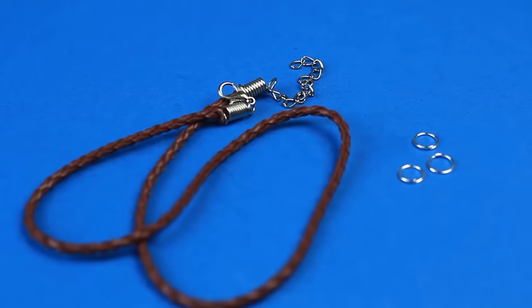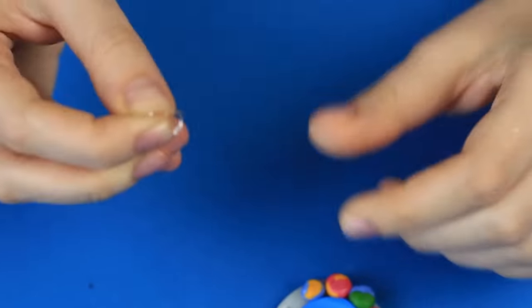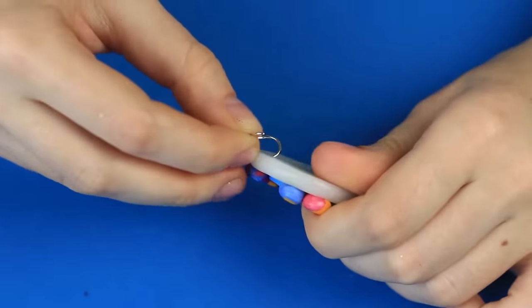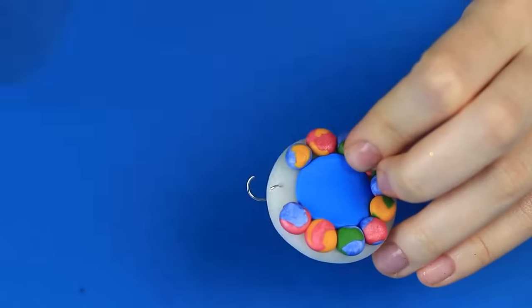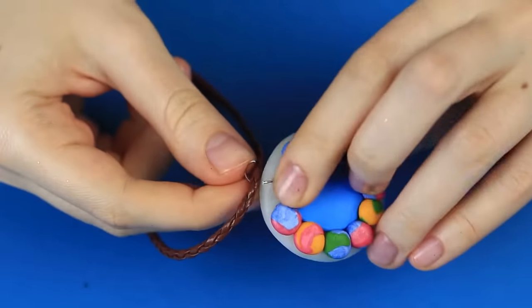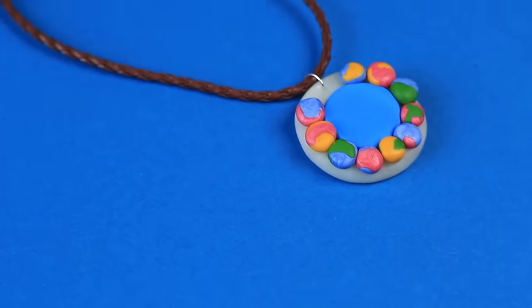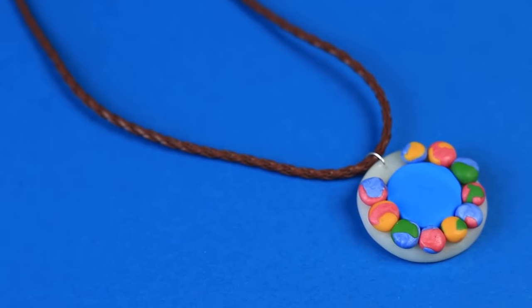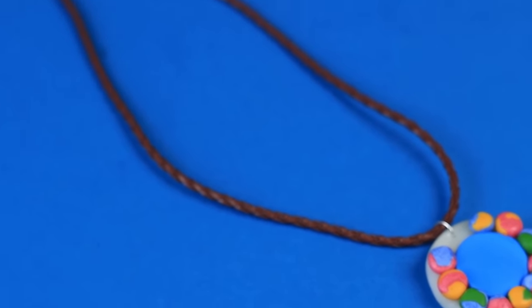Take jump rings and braided cord. Open a ring and pass it through the hole. Put it on the cord and close the ring. The cute fingerprint pendant keeps a secret and thus can become a very special gift for a close friend.